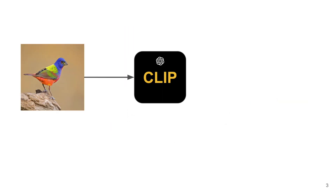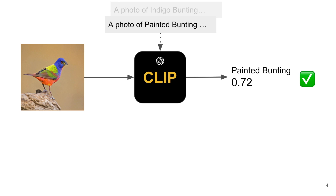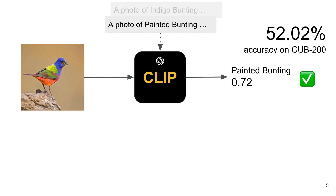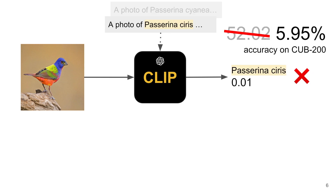When we feed a bird image to OpenAI's CLIP, along with a set of 200 class names in the prompts, CLIP correctly identifies it as a painted bunting. It achieves around 52% zero-shot accuracy on the CUB test set. However, when scientific names are used, CLIP's accuracy drops significantly to around 6%, revealing three critical problems.